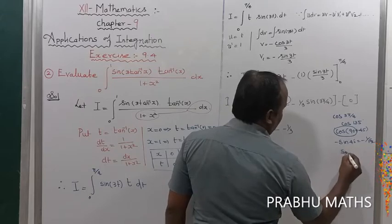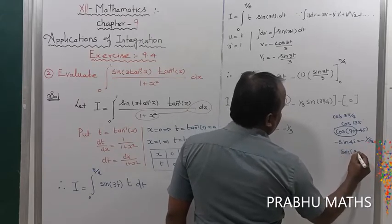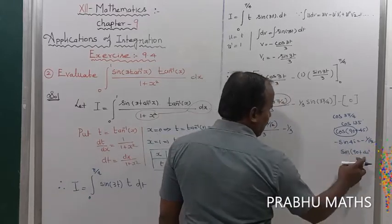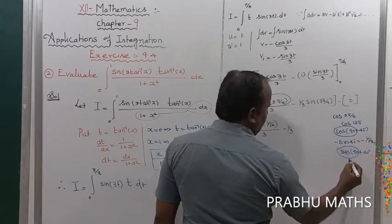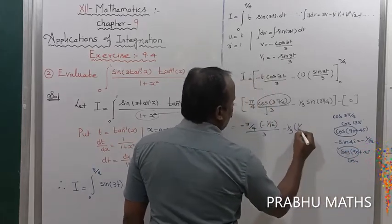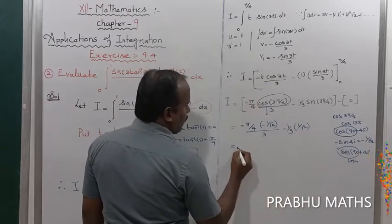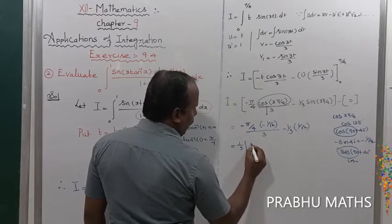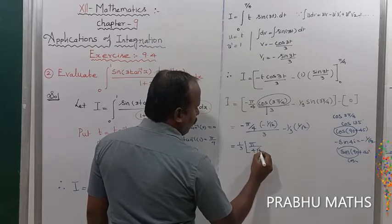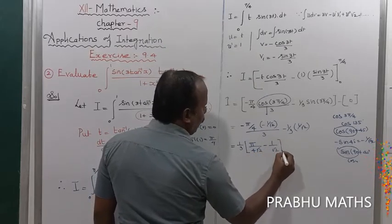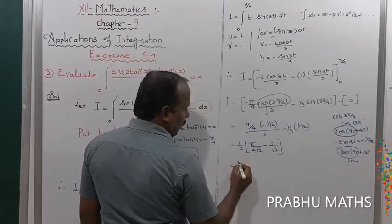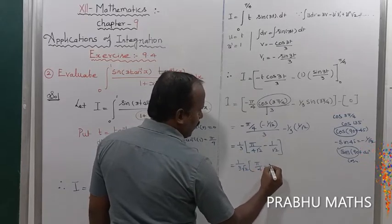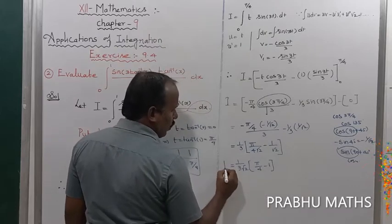For sin(3π/4) = sin(135°) = sin(90° + 45°). In the second quadrant, sine is positive. sin(90° + 45°) = cos(45°) = 1/√2. So sin(3π/4)/9 = 1/(9√2). Therefore i = 1/(3√2) · [π/4 + (−1)] ... simplifying with common factor 1/√2: i = (1/√2)·(π/12 − 1/9).